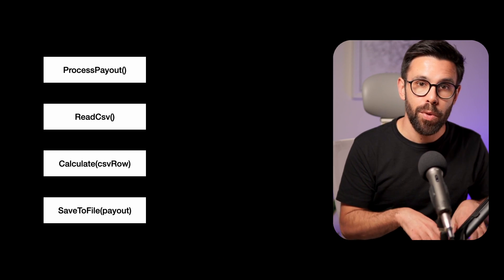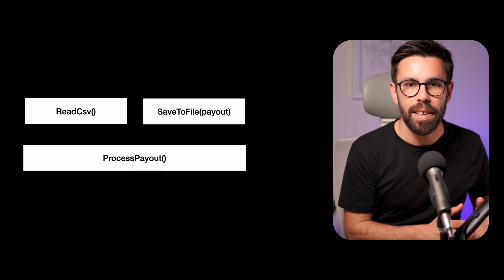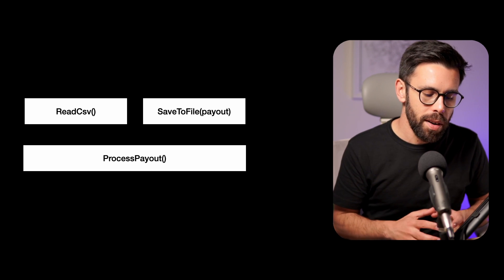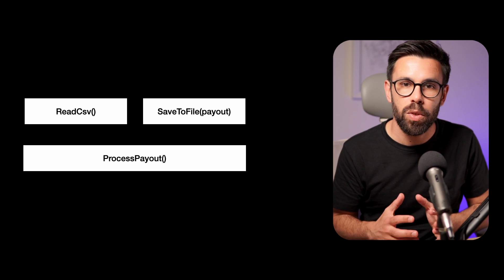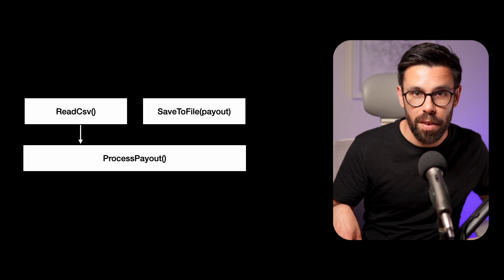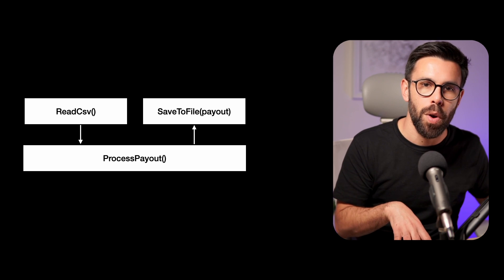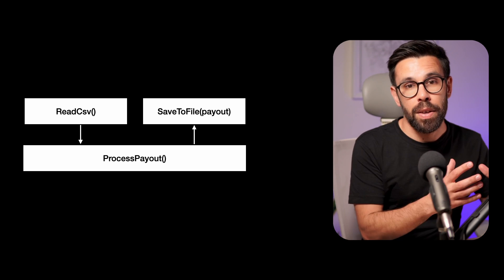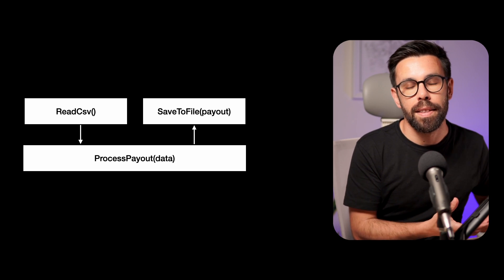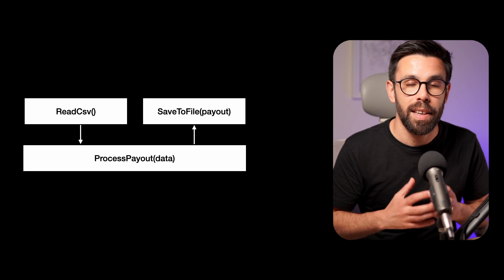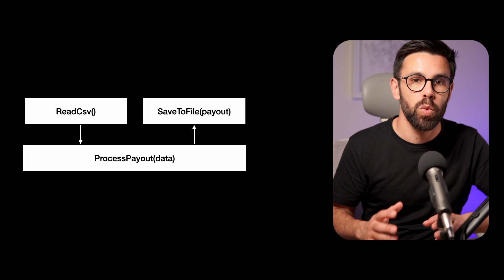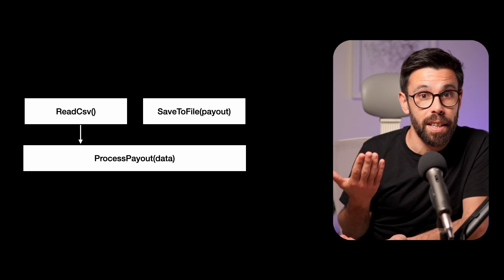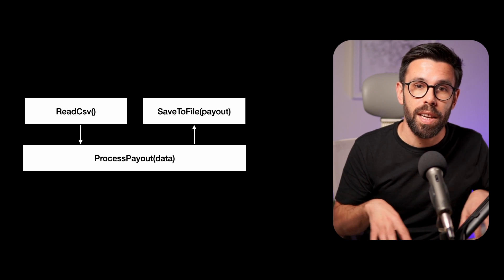We can refactor this system to be loosely coupled by treating it as a pipeline. Multiple responsibilities are separated, and each component doesn't need to know the implementation of the next or previous one. A first task collects and provides data to the calculation step; the calculation provides data to an output generator without knowing what type of generator it is. That gives you a loosely coupled system where you can easily swap implementations.